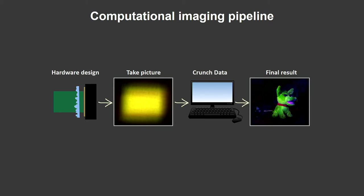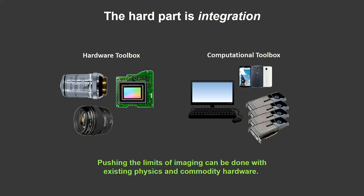You just have to get the information to the sensor and then solve it in computation. We carefully designed this — it results in a very flat, cheap, simple camera. The hard part is integration: knowing what to put together and how. You can't just write an optimization problem; you need expertise in both optics and algorithms. A lot of what my lab does is pushing the limits of imaging using existing physics — commodity hardware, to keep it accessible.